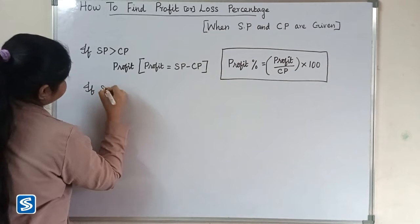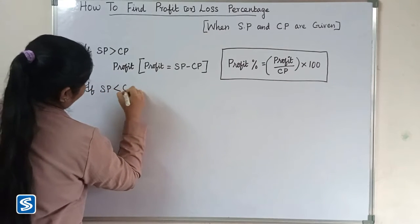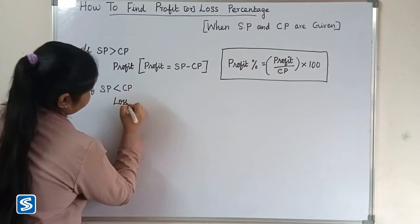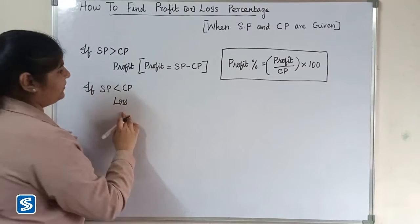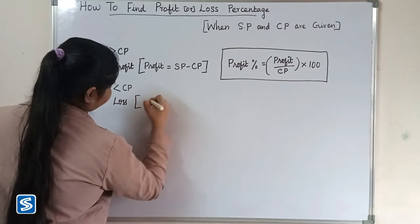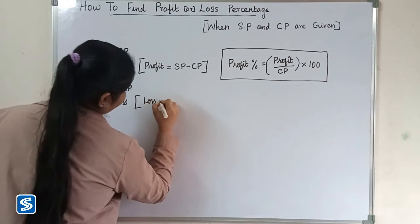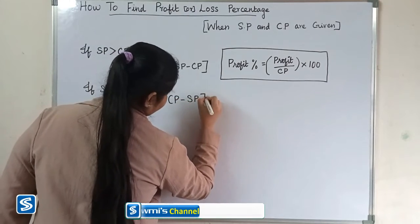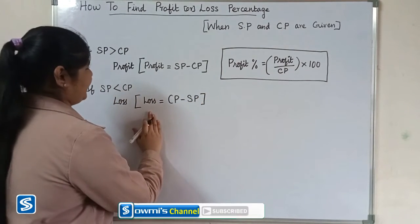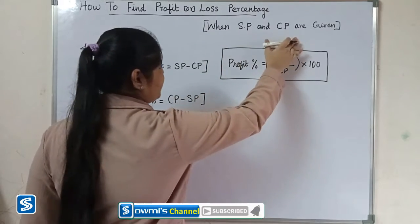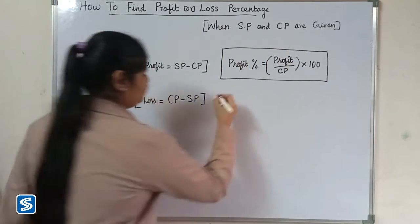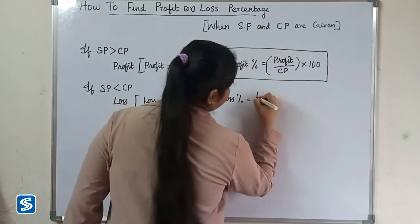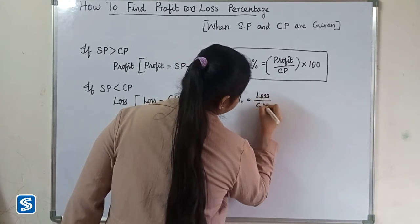If selling price is less than cost price, then we have a loss. So loss is equal to cost price minus selling price. To find loss percentage when selling price and cost price are given, we use the formula: loss percentage is equal to loss divided by cost price multiplied by 100.